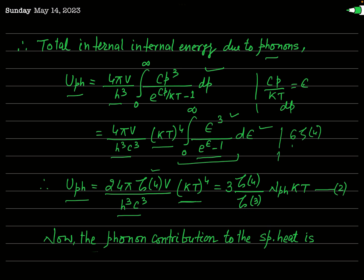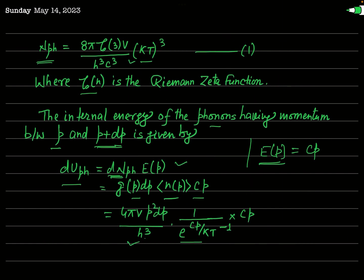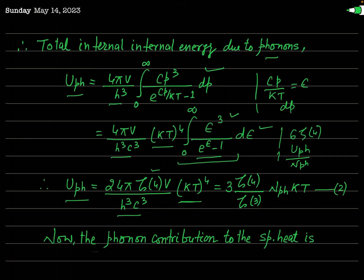Taking the ratio of U_ph to N_ph, we get: U_ph / N_ph = [3 zeta(4) / zeta(3)] times kT. This is the relation between the internal energy and the number of phonons. The internal energy U_ph is proportional to T to the power 4, and this result differs from the result obtained earlier in the case of the ideal Bose gas model.